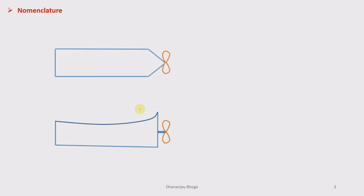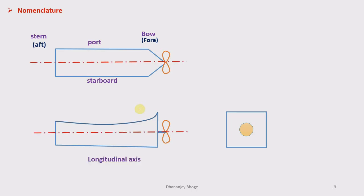This is the ship as seen in front view, top view, and side view. The front end of the ship is called the bow or fore end, the back side is called the stern or aft, the left-hand side is called port, and the right side is called starboard. The propeller rotates about the longitudinal axis, visible in both front and top views.